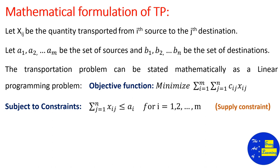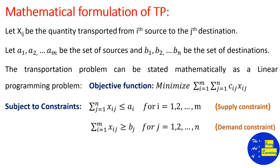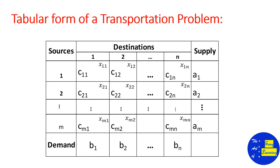Coming to the constraints: the supply constraint is given by summation j from 1 to n of xij less than or equal to ai, for all i — meaning the total requirement should be less than or equal to supply, otherwise we are unable to fulfill the requirements. The demand constraint is summation j from 1 to n of xij representing the demand constraint.